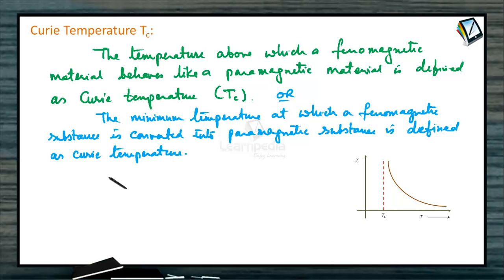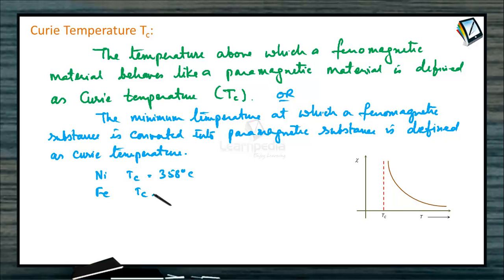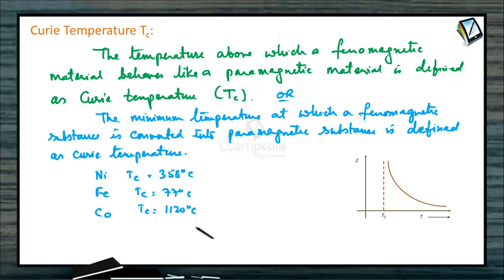For various ferromagnetic substances, the values are different. For nickel, it is around 358 degrees centigrade. For iron, it is around 770 degrees centigrade. For cobalt, it is around 1120 degrees centigrade. At these temperatures, the ferromagnetism of the substance suddenly vanishes.